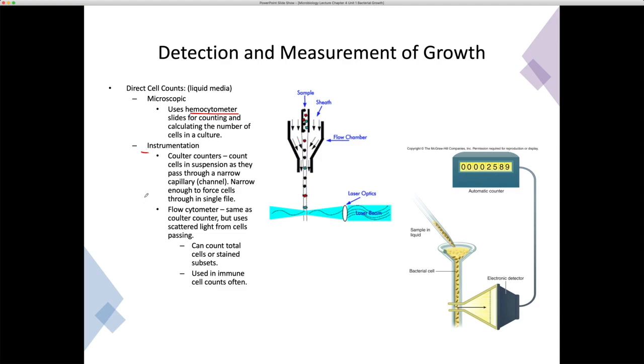Nowadays, they use instrumentation. There are two different types: a coulter counter and a flow cytometer. The coulter counter counts cells in suspension but cannot differentiate between dead cells, living cells, host cells, or mixed samples. So the coulter counter is really great for getting a general cell count, but it doesn't tell the difference between any of those different cell types.